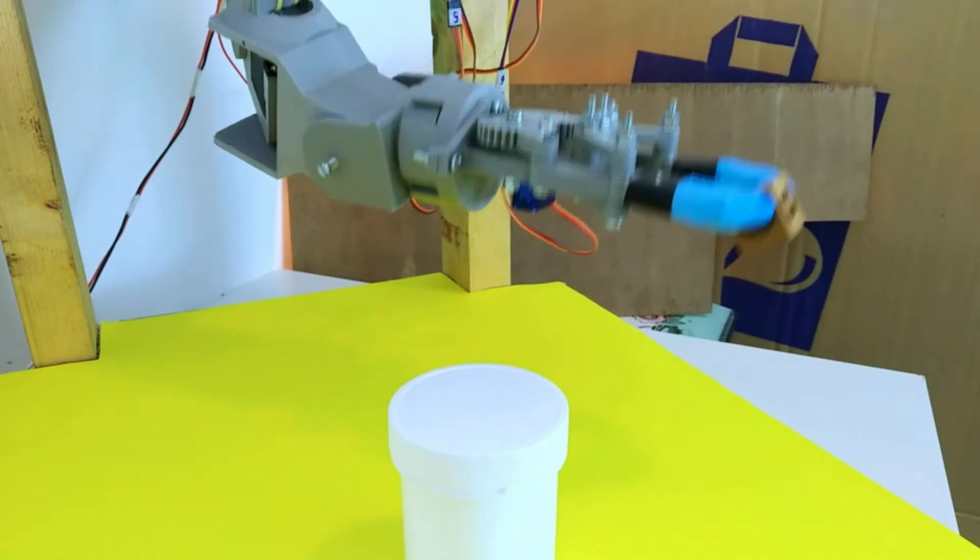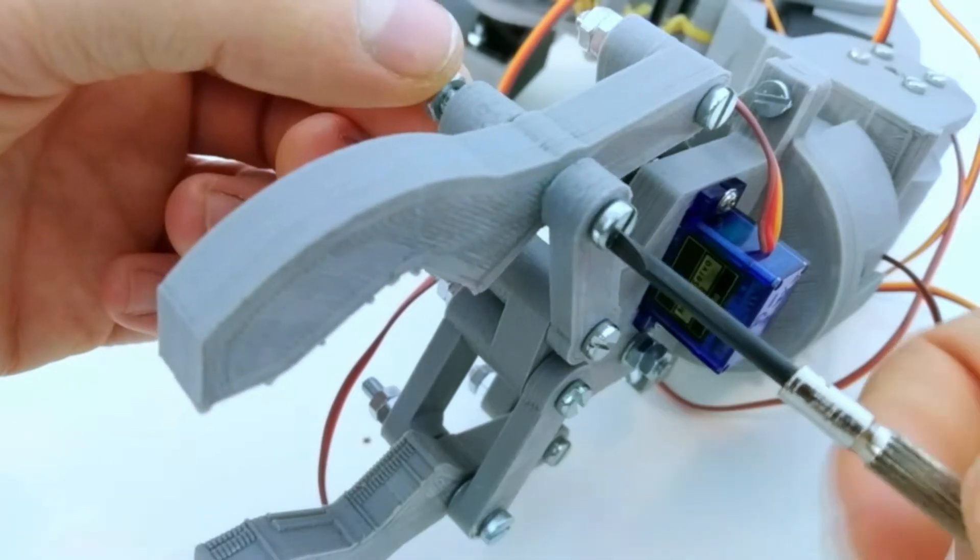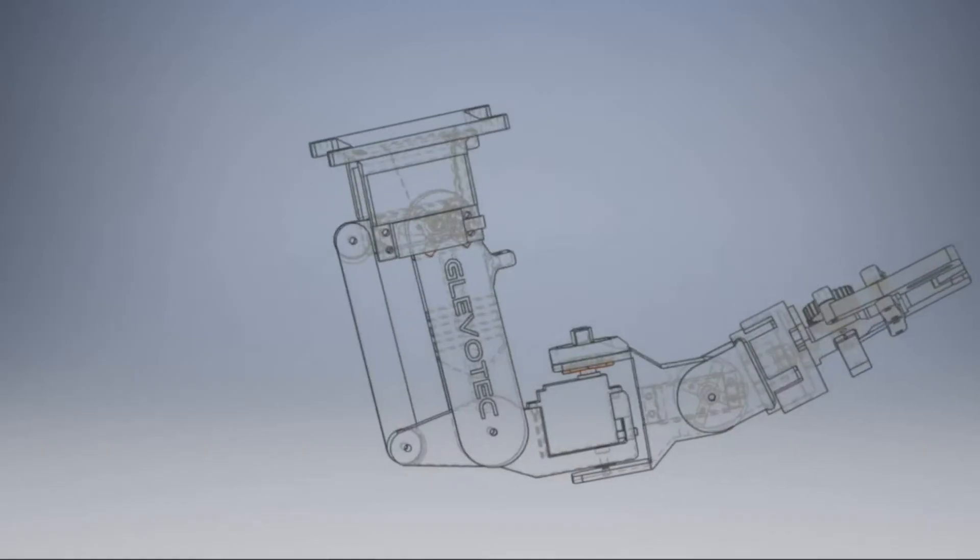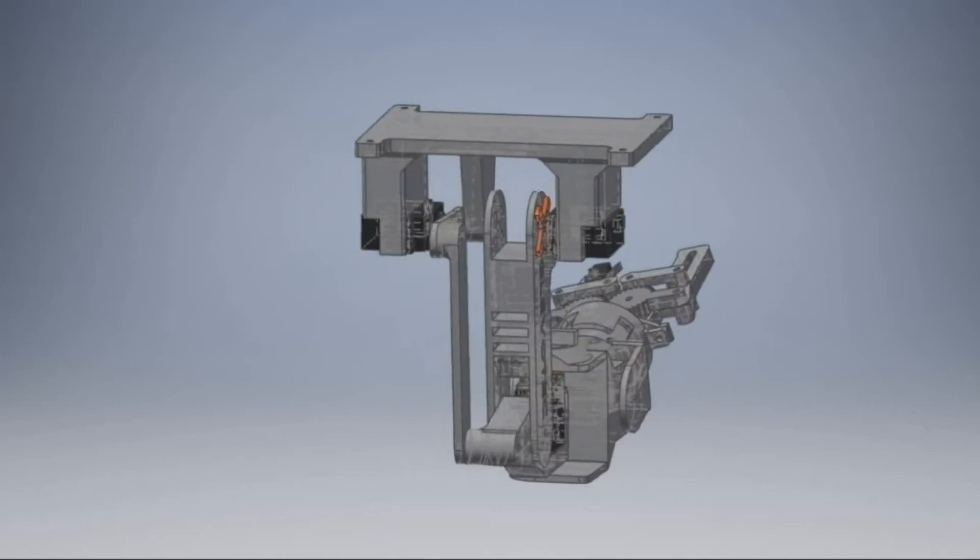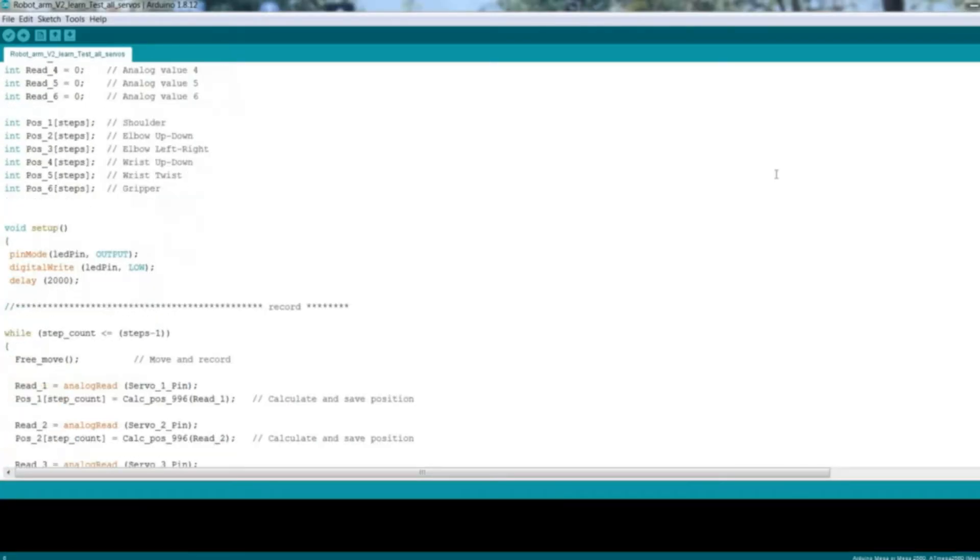In the previous video I showed you my design of a 3D printed humanoid robot arm, simple to build and easy to operate with an arm controller. Now I have optimized the mechanical design and rewritten the software to make it a lot easier to program movements.